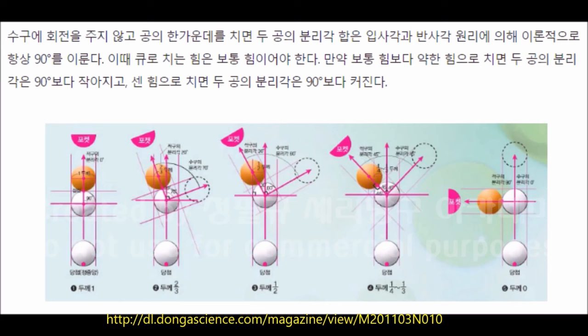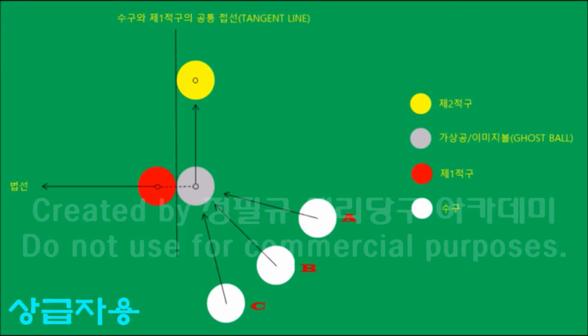이 원리의 전제조건은 힘은 보통 힘이고 당점은 중심 당점입니다. 분리각 원리를 이용하여 두 적구를 맞추겠습니다. 흰 공 A, B, C는 각기 위치가 다른 수구이고, 빨간 공이 제1적구, 노란 공이 제2적구이며, 중앙의 회색 공은 이미지볼로서 수구가 적구와 충돌한 순간입니다. 수구가 A, B, C 어떤 위치에서든 이미지볼처럼 맞으면 수구는 노란 공(제2적구) 쪽으로 갑니다.